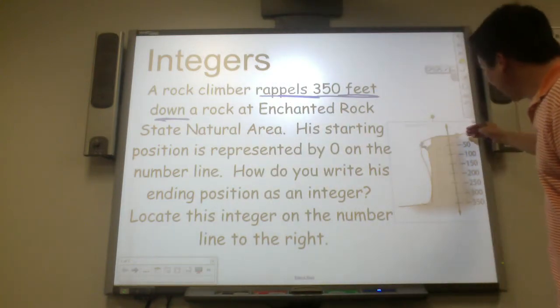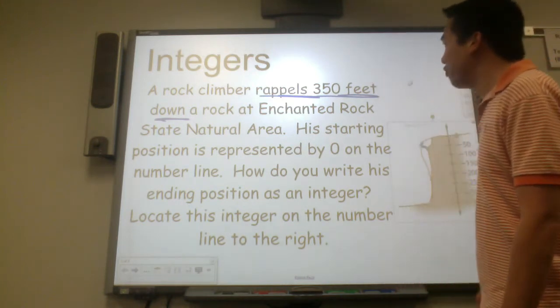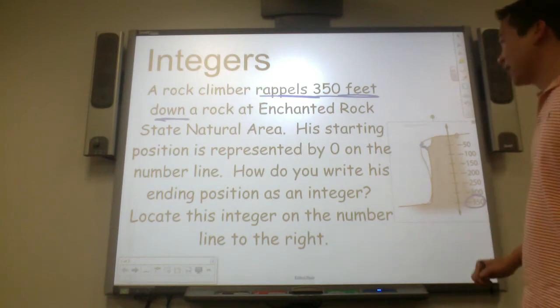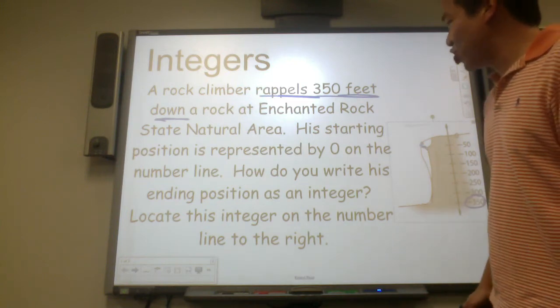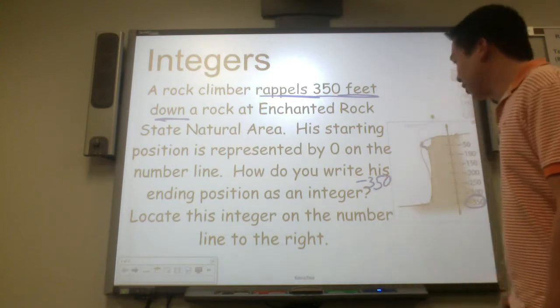So he's starting at zero, looks like he's going negative. So he's going negative, 350 feet down. So I think it's this one right here. So how do you write his ending position as an integer? Negative 350 feet.